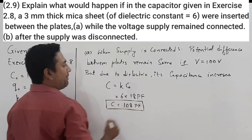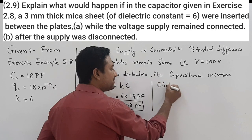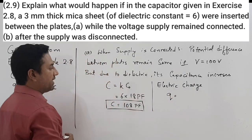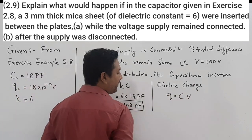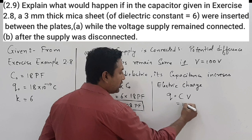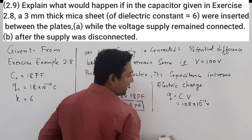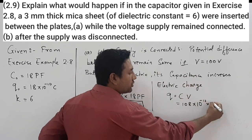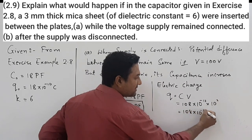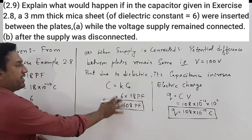Now let's talk about the charge. The electric charge Q = C × V. Capacitance is 108 picofarad, that is 108 × 10⁻¹² farads, and voltage is 100 volts. So the new charge is 108 × 10⁻¹⁰ coulomb.